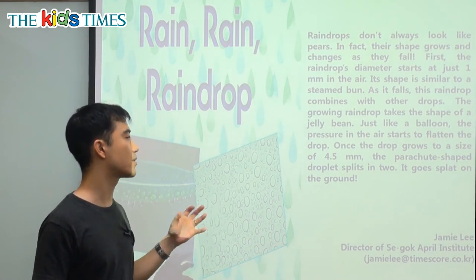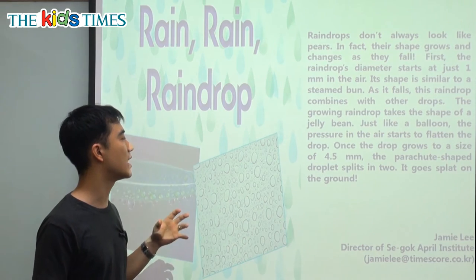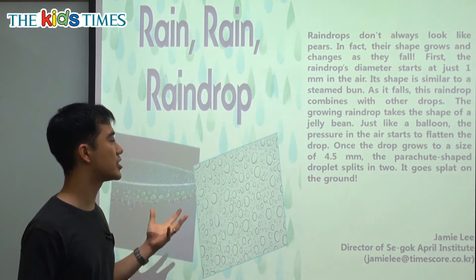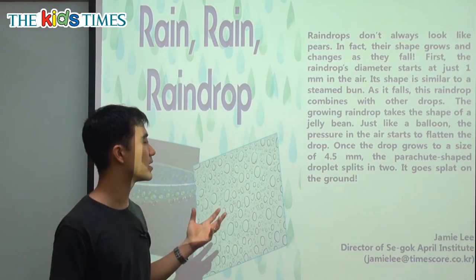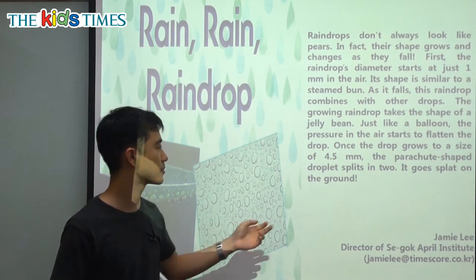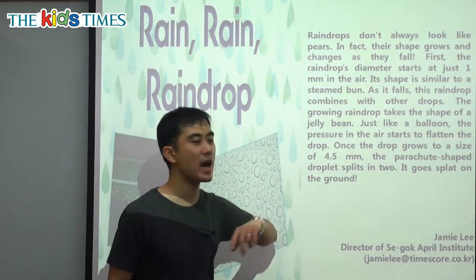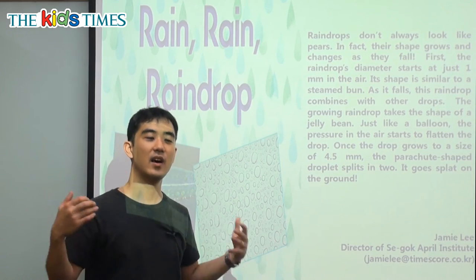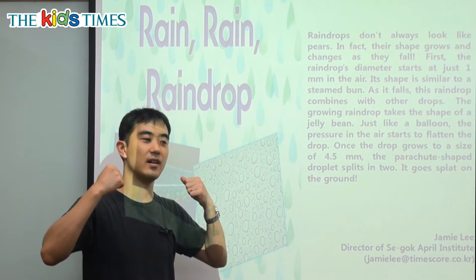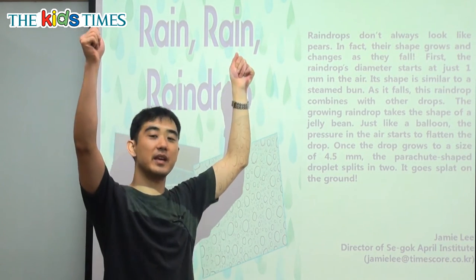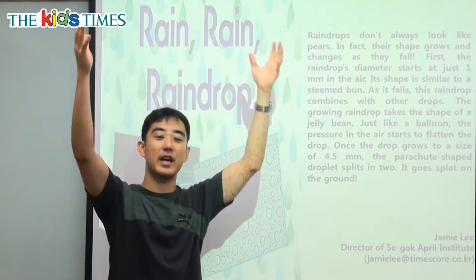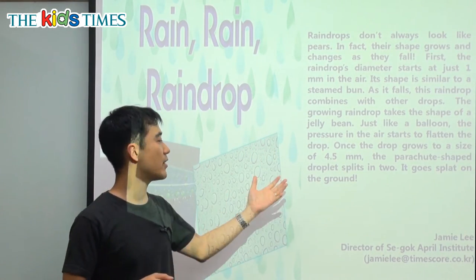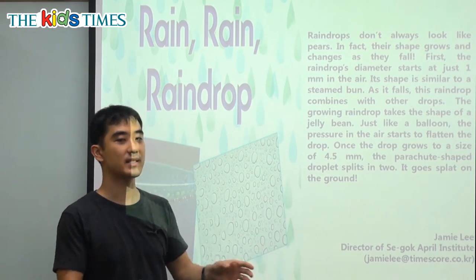Once the raindrop grows to a size of 4.5 millimeters, the parachute-shaped droplet splits in two. A parachute is when people jump from airplanes and fly down on this big parachute — we know that shape when they're falling.